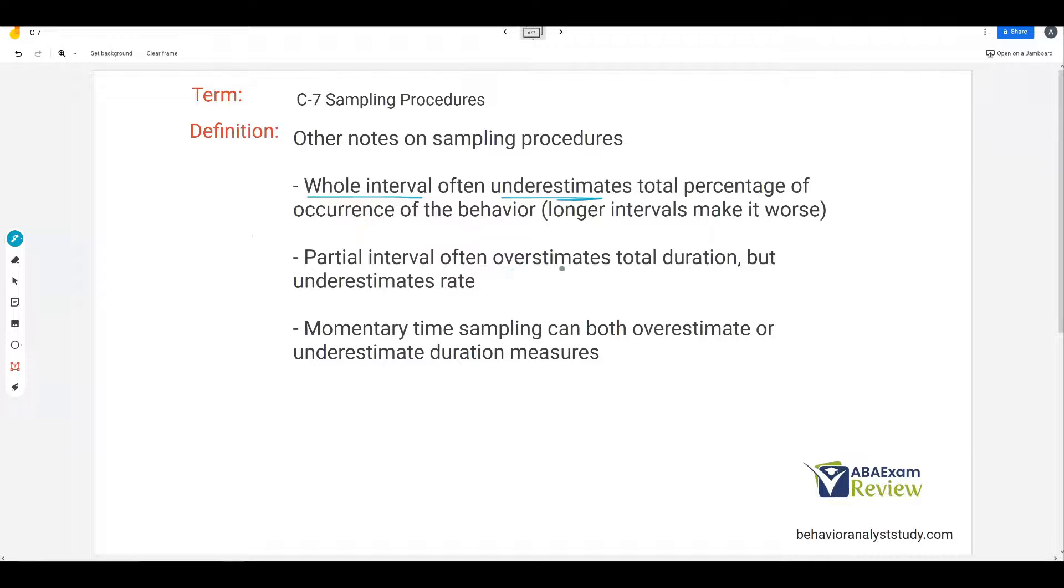Partial interval often overestimates total duration but underestimates rate. Because, same example, 10-second intervals, if that behavior happens for a split second, it looks like it happened for 10 seconds. But if that behavior happens 15 times, I'm only giving one data point. To understand whole and partial and why they underestimate, why they overestimate, that's a very important piece of knowledge.